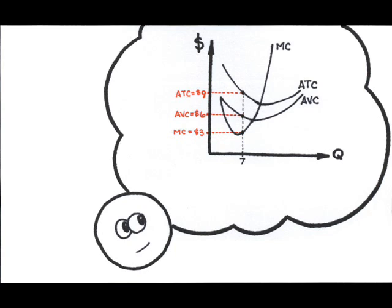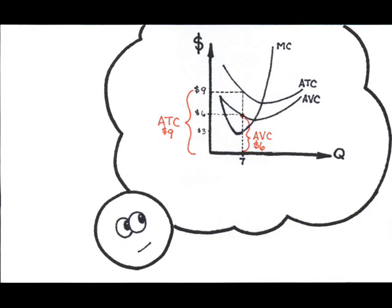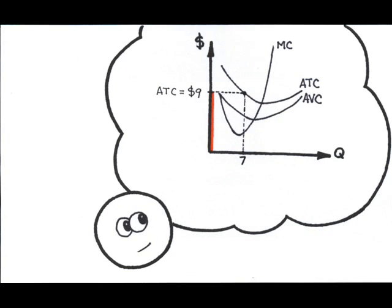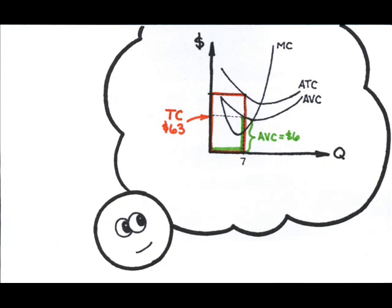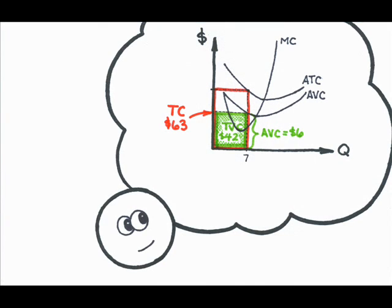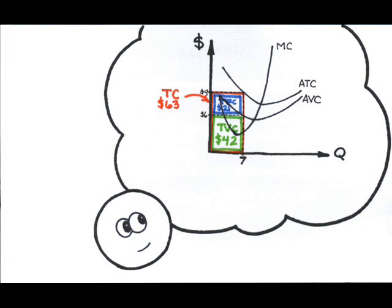Well, average fixed cost isn't too difficult. On average, a single unit costs $9, $6 of which is variable, meaning the other $3 must be the average fixed cost component. Now, for the total costs. If one unit costs $9, how much do 7 units cost? $9 per unit times 7 units is $63. The variable piece per unit is $6, so the variable cost of all 7 units must be $42. Therefore, the remaining $21 represents fixed costs.